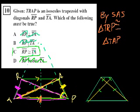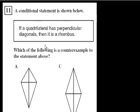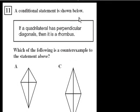You didn't have to do all of that — it's a multiple choice test — but I wanted to give you a more rigorous proof. Anyway, problem number 11: a conditional statement is shown below. If a quadrilateral has perpendicular diagonals, then it is a rhombus.